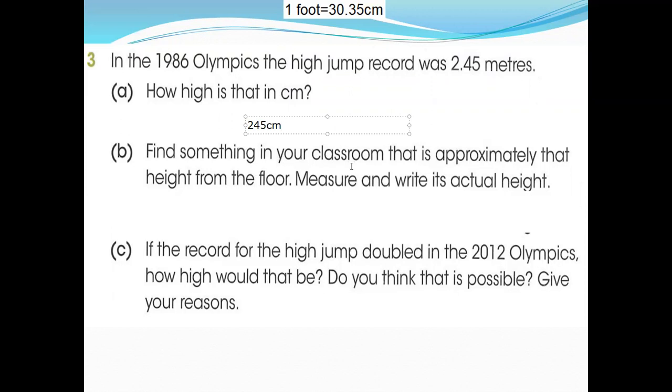Find something in your classroom, not classroom, in your home, a door, a window, as you like, that is approximately that height from the floor. Measure and write its actual height. So let's measure the door, the door in your home. If you're measuring in feet, one foot equals 30.35 centimeters, or you can say 30.5 centimeters. A door is mostly seven or eight feet. If it's eight feet, so you need to write here door length, approximately. If you multiply, this is more than 200, like 213 or 212-213. Approximately. This is the length of normal doors.